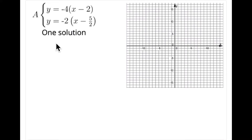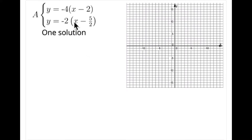There are five problems, A through E. For A, there's just one solution — a single solution — which means the slopes of the two graphs will be different and those lines will intersect. You can begin to see the different slopes: after distributing negative 2 to x minus five-halves, you get negative 2x. The other equation gives negative 4x. Those are the slopes — negative 4 and negative 2 — different slopes, so those lines will intersect.